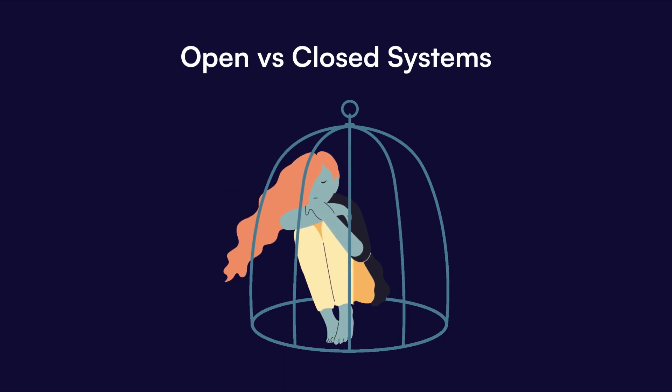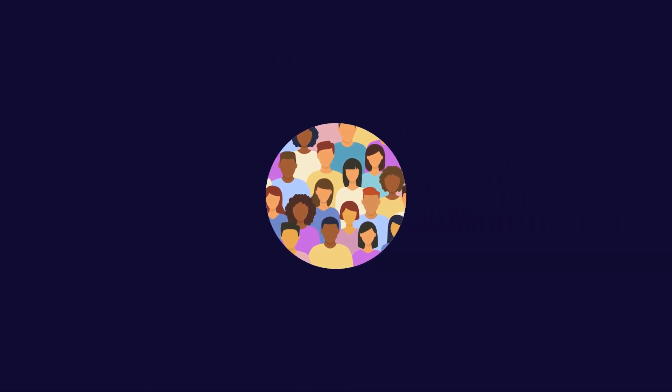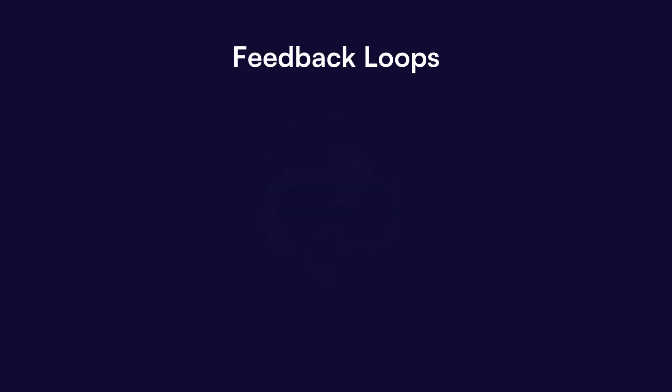Systems theory also differentiates between open and closed systems. An open system interacts with the environment, exchanging information and resources, while closed systems are more isolated, with minimal interaction with the surroundings.